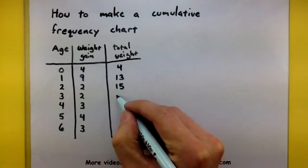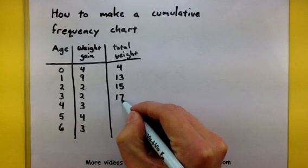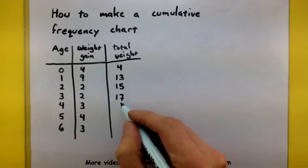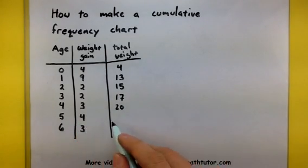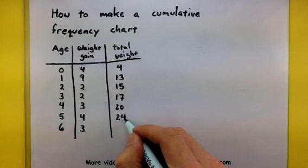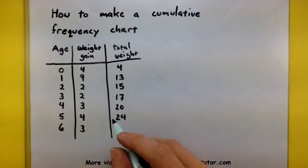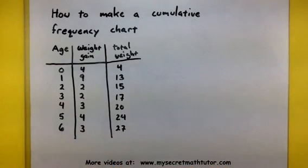So the next year when we have another two pounds, this will jump up to seventeen. And then twenty, twenty-four. And looks like by age six, they were all the way up to twenty-seven pounds.